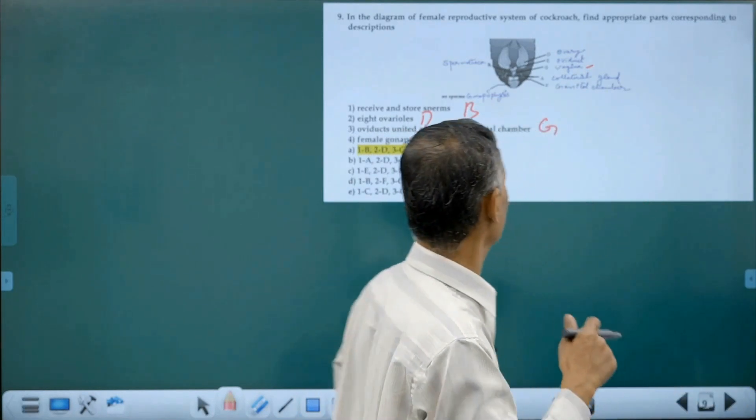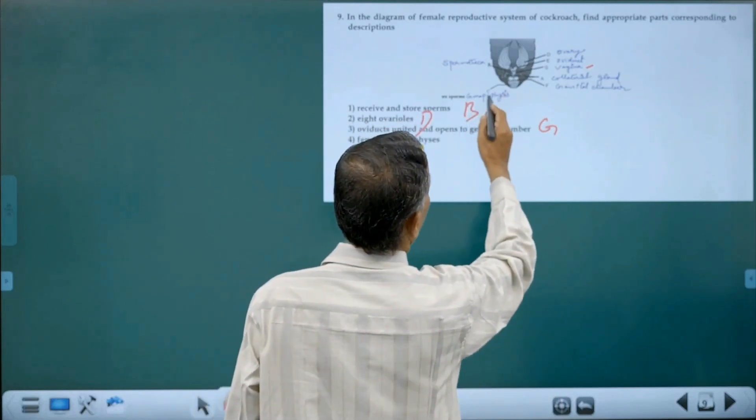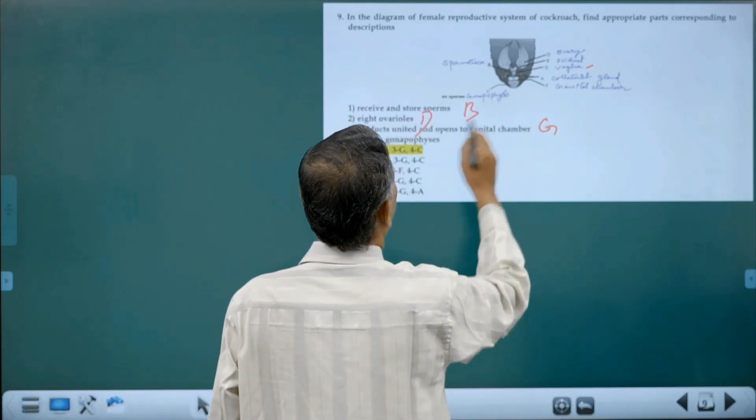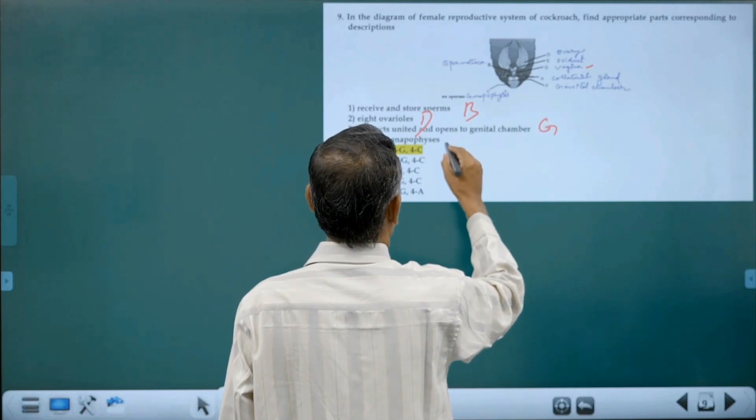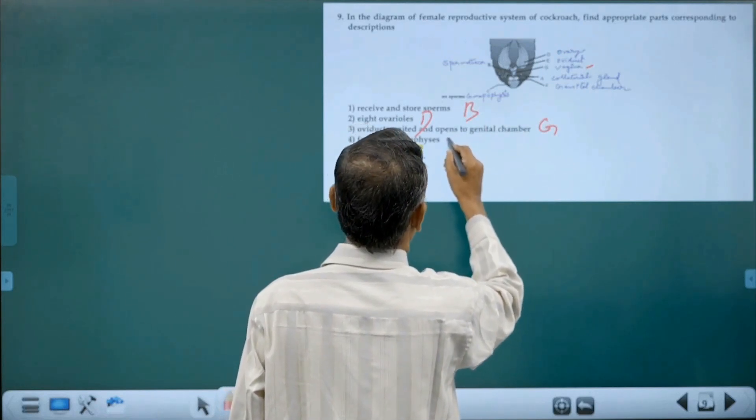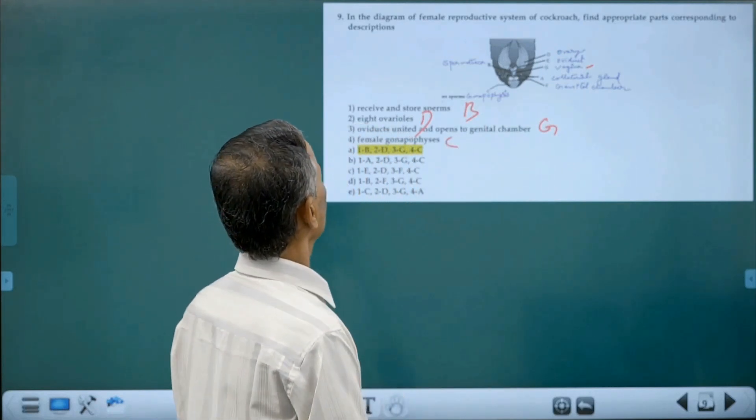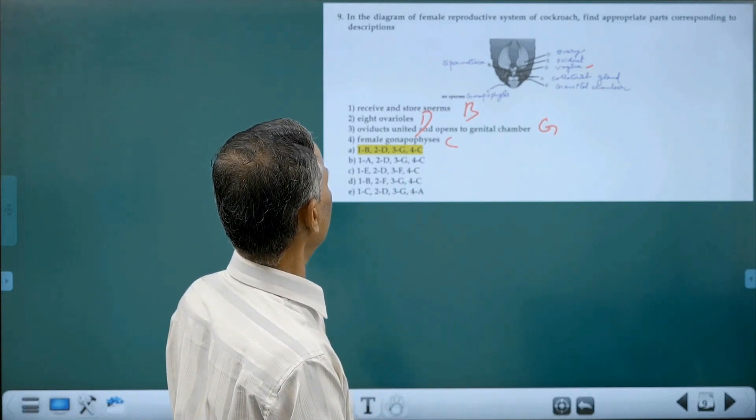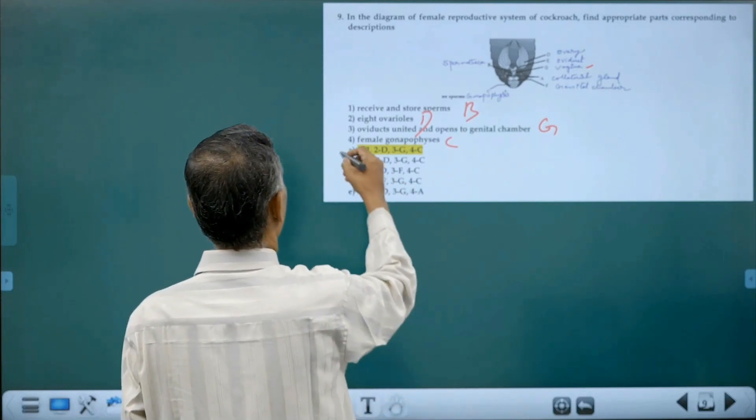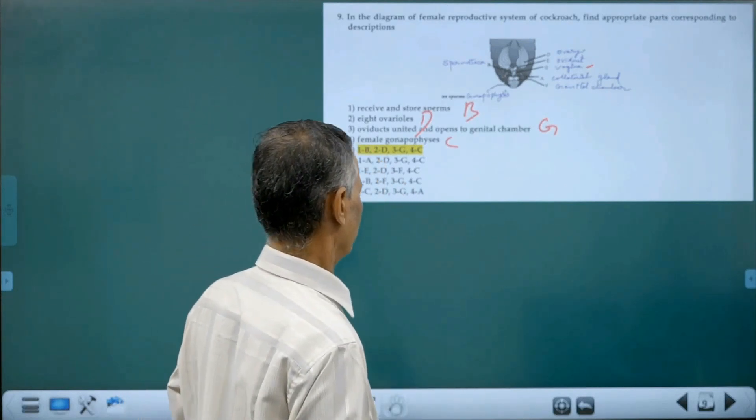So here it is the gonapophysis. That is the external genital visible part. So that should be the order: B, D, G, C. That's why you take it as the correct answer.